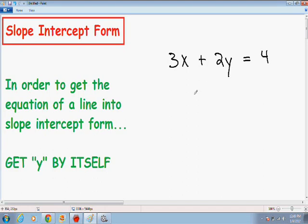And the only thing that you need to know to get the line in slope-intercept form, and I wrote it for you in green on the left hand side, it says in order to get the equation of a line into slope-intercept form, you want to get y by itself. So essentially you just want to solve this equation for y.